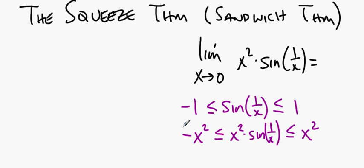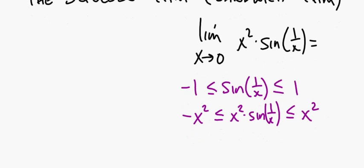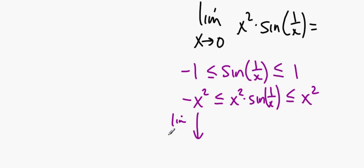So here's the question. What happens to this? What happens to this as x gets closer and closer to 0? Those y values get closer and closer to 0. And as x gets closer and closer to 0, this gets closer and closer to 0. So here's my question. If this is trapped between those two things, and this gets closer and closer to 0, and this gets closer and closer to 0, guess what happens to that? Right. It gets closer and closer to 0.